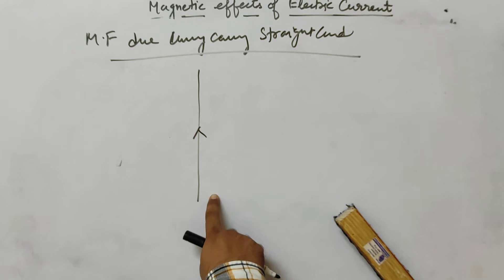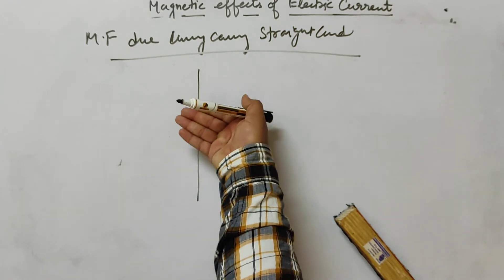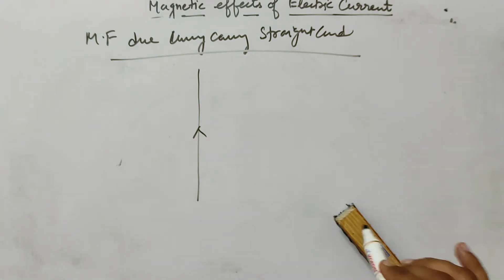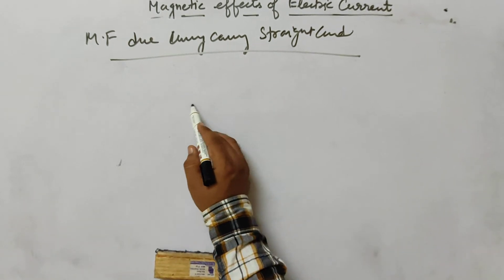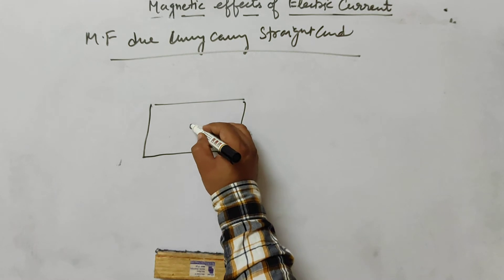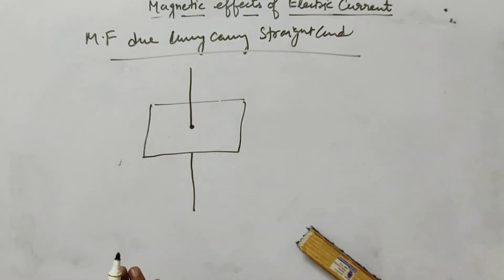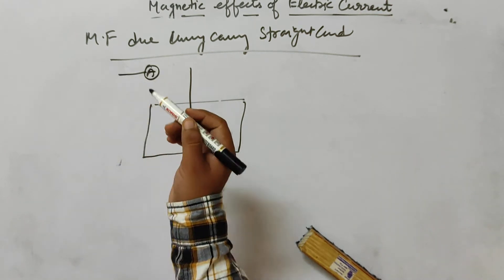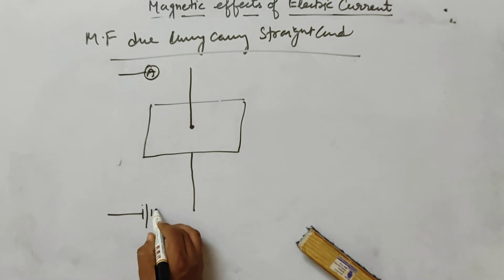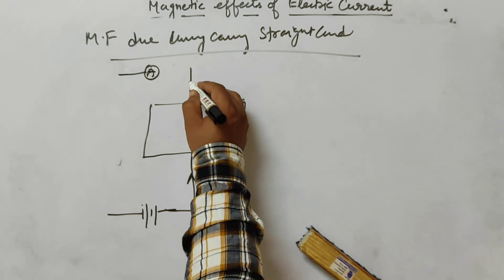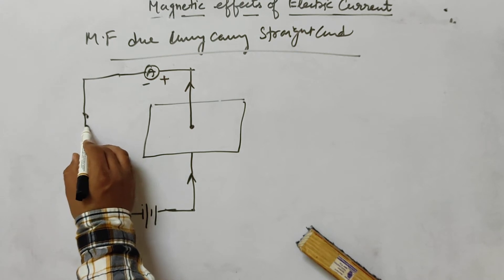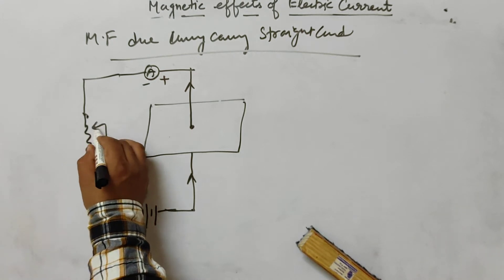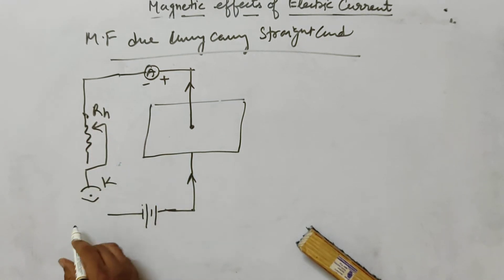We can trace the magnetic field lines using iron filings. We place a cardboard and sprinkle iron filings around the conductor. A battery is connected with a rheostat (Leo Start) and a key to control the current. Current passes from positive to negative through the conductor.